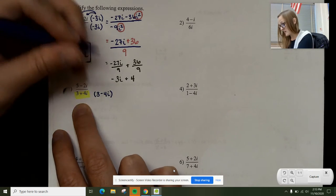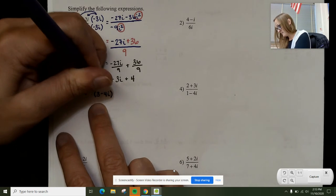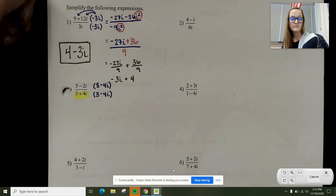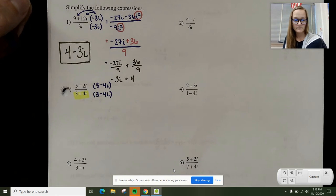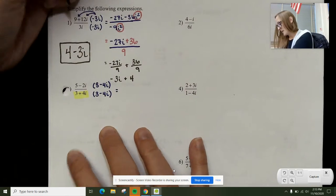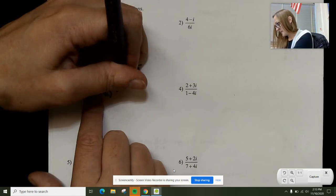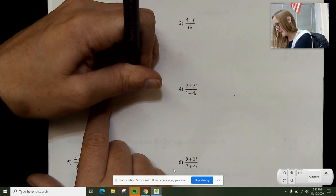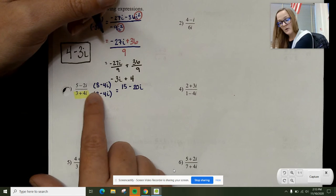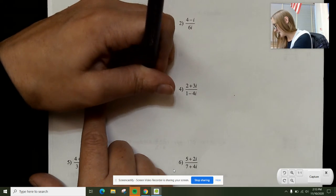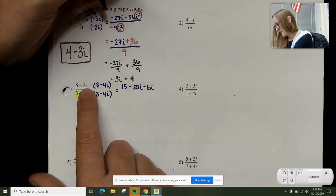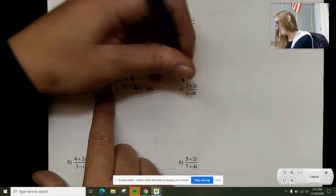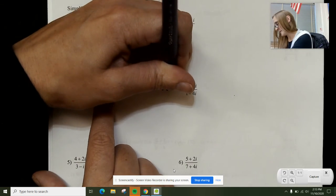What I do to the bottom, I also do to the top. Now I have to go through and multiply this out. 5 times 3 is 15. 5 times negative 4i is negative 20i. Negative 2i times 3 is negative 6i. Negative 2i times negative 4i is plus 8i squared.